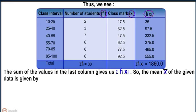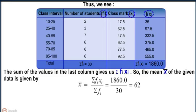The sum of the values in the last column gives us summation fi xi. So, the mean x bar of the given data is given by x bar equals summation fi xi divided by summation fi, which equals 1860 divided by 30, which equals 62.